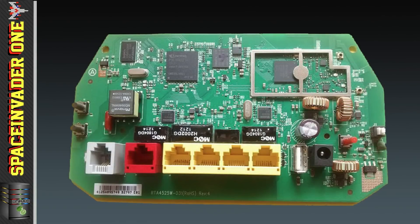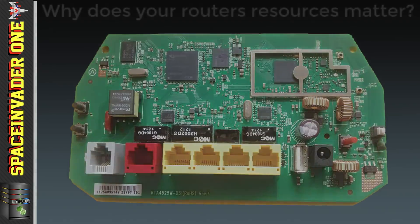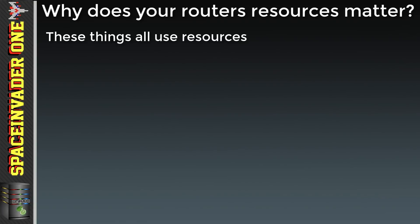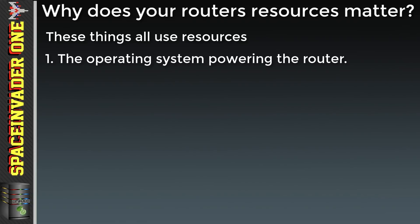Consumer routers normally have a low-powered CPU and very little RAM, often only about 64 megabytes, or if you're really lucky maybe 128. You might be thinking: why does the CPU and RAM actually matter so long as the router turns on and you get internet? Well, that's not true, because it's probably not going to be doing its job very well. The resources the router has aren't just used up by the OS — resources are used up by what's happening on the router as well.